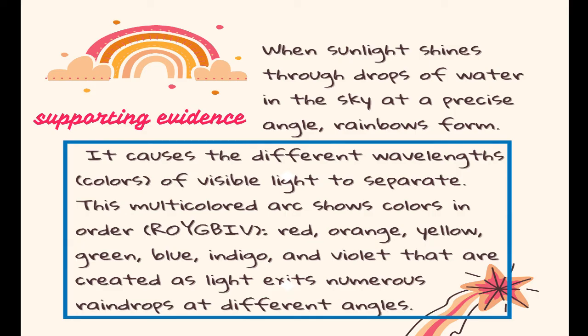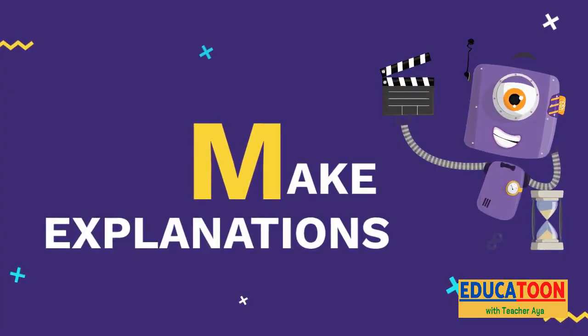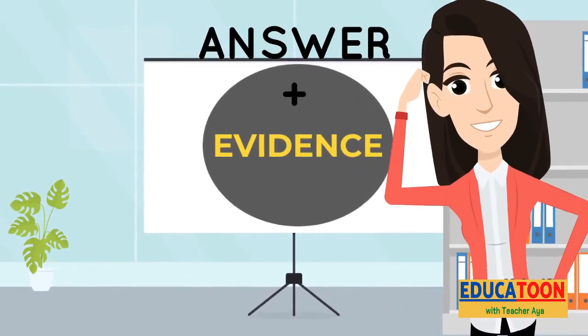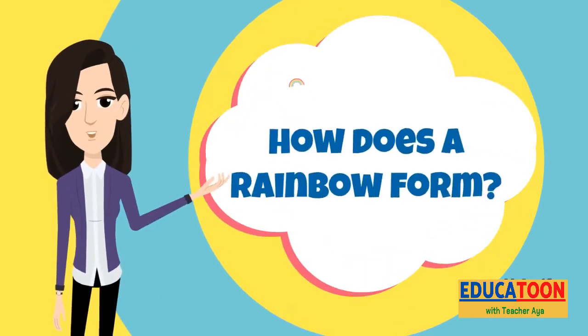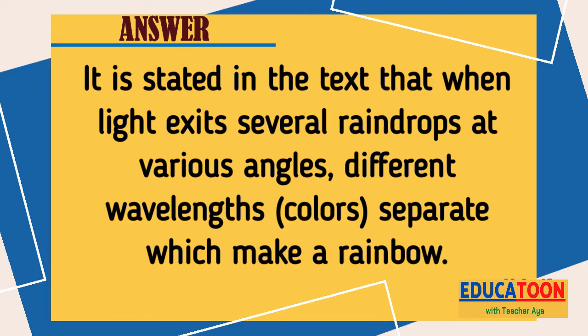Once you find the evidence that can support your claim, you can move to letter M — Make explanations. We have to support our explanations using our own words or by copying exactly what the author said. We can now improve our previous answer by including the evidence we found in the text. So, how does a rainbow form? It is stated in the text that when light exits several raindrops at various angles, different wavelengths or colors separate, which makes a rainbow.